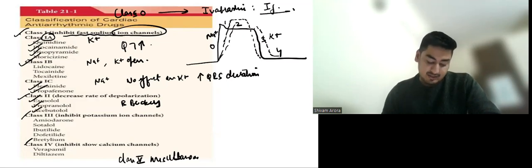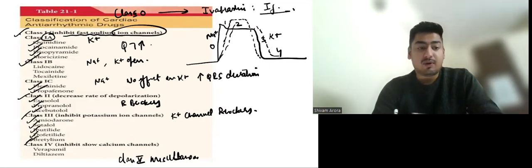Then we have class 3 agents, which are again, potassium channel blockers. And this we have Amiodarone, Sotalol, Ibutilide, Dofetilide and Bretylium. So important thing about class 3 agent is that Sotalol, although being a beta blocker, is in class 3. Now class 3 agents are potassium channel blockers. So they will also prolong QT.